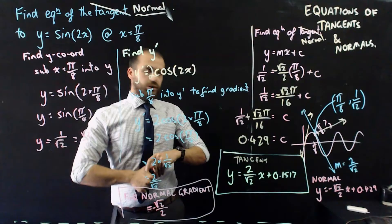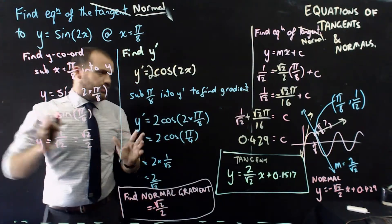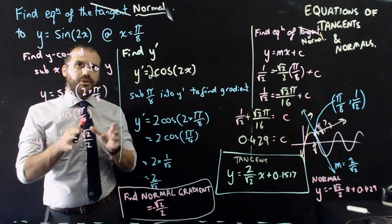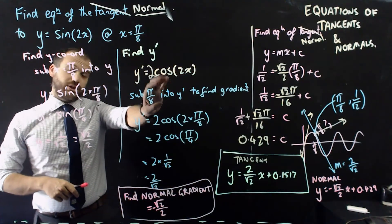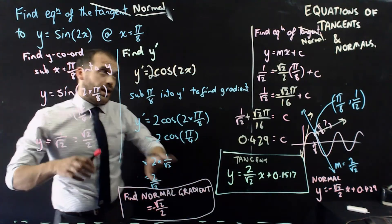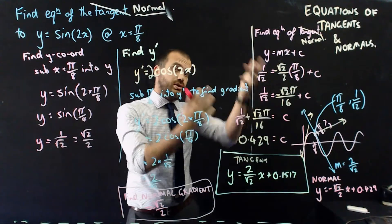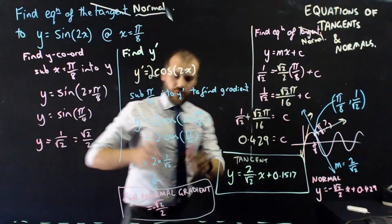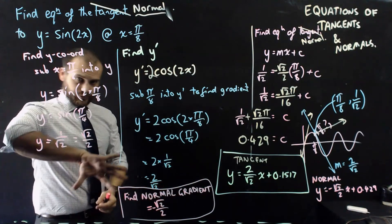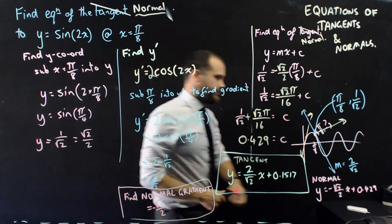Lots of work here, but you can see that it boils down to a couple of bits. I found a y coordinate, I found the derivative, which allowed me to find the gradient, and then I found the equation by using y equals mx plus c. That's the same for tangents and normals, normals just has this extra little bit where you do a negative reciprocal.